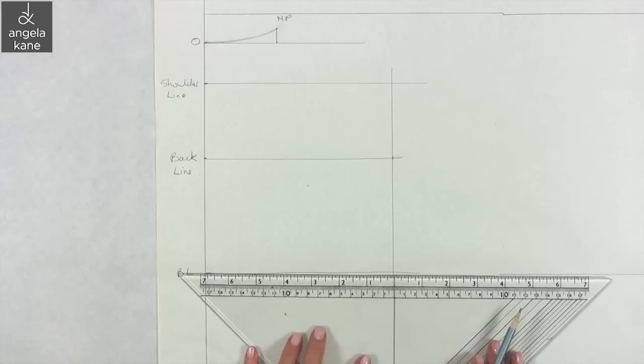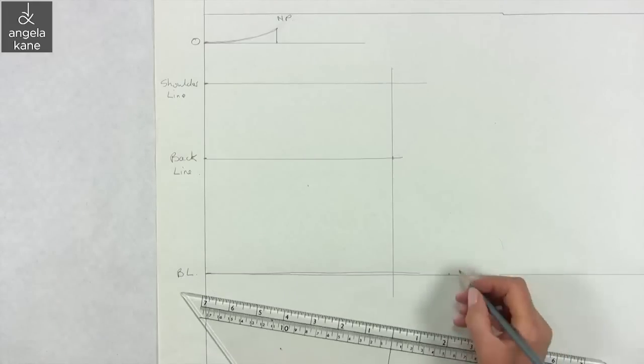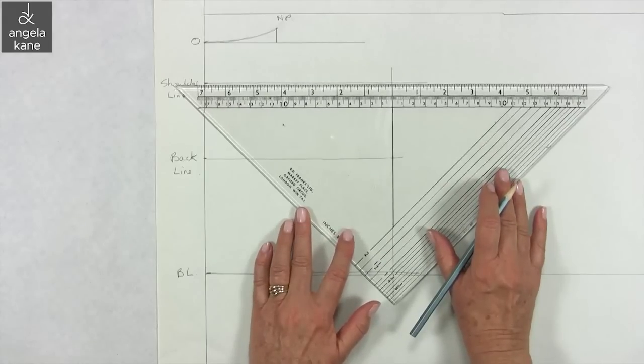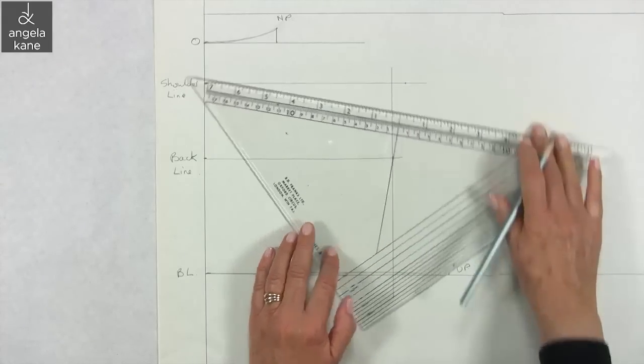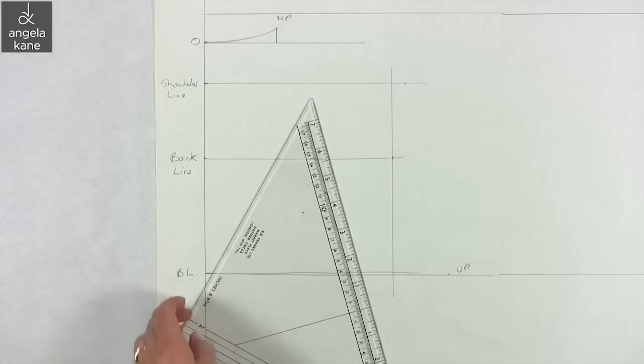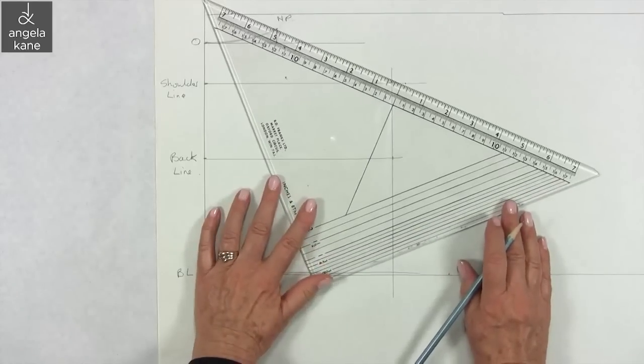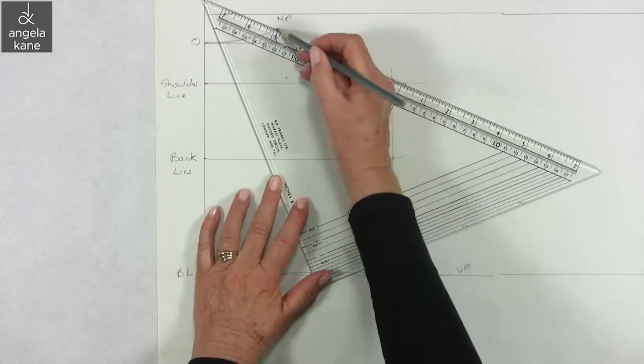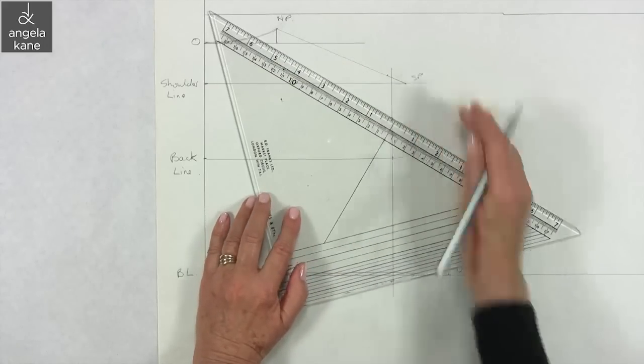On the back line measure out two inches for all sizes and label it UP for underarm point. On the shoulder line measure out a half an inch and label it SP for shoulder point. Now join NP to SP for the shoulder seam. You can check the shoulder seam length with your own measurement.